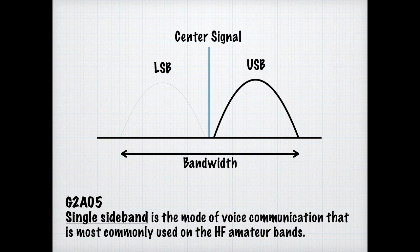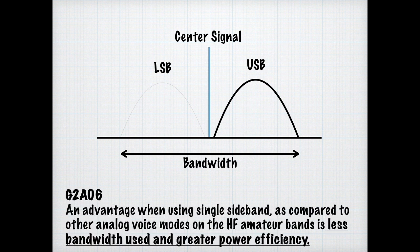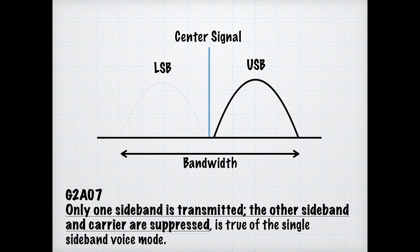You need to know for the exam that single sideband is the mode of voice communications most commonly used on HF amateur bands. The advantage of using single sideband compared to other voice modes such as FM is that it uses less bandwidth and you have greater power efficiency. Because you're only transmitting on one portion of the band, you can focus all the energy on that portion. Only the sideband is transmitted — the other sideband and the carrier are suppressed.